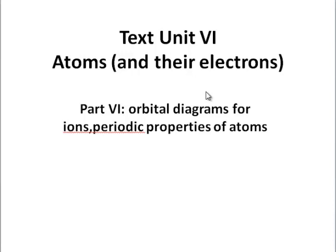This is the sixth and last lecture for text Unit 6 on atoms and their electrons. In this lecture, we examine orbital diagrams for ions and periodic properties of atoms.